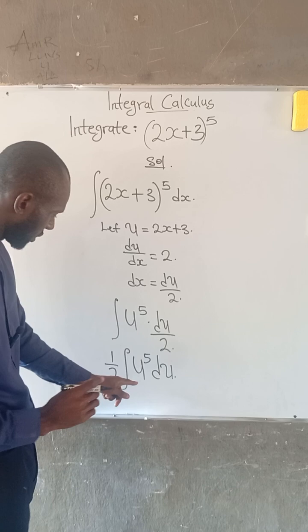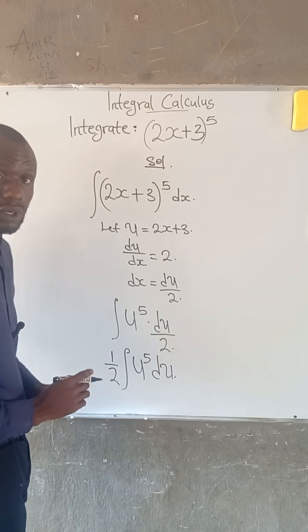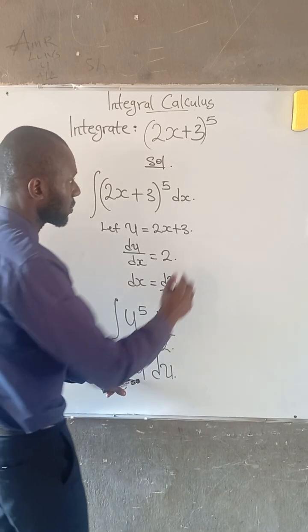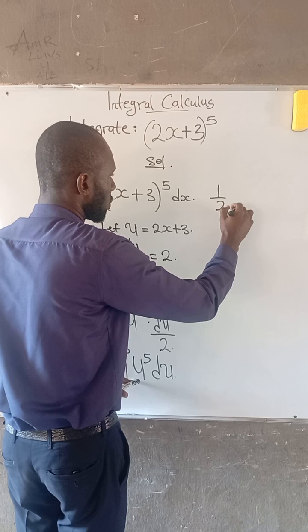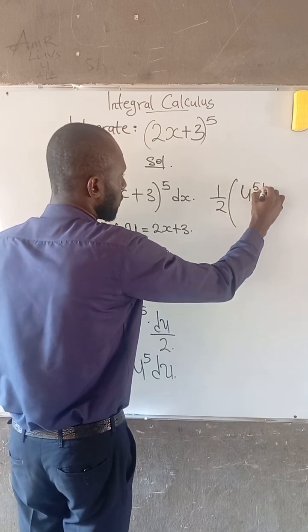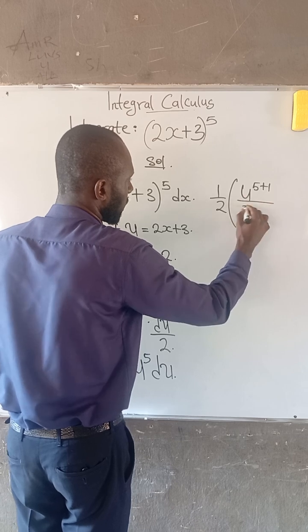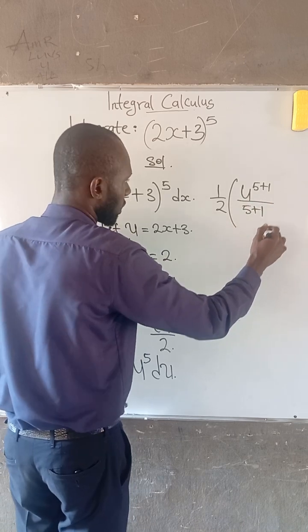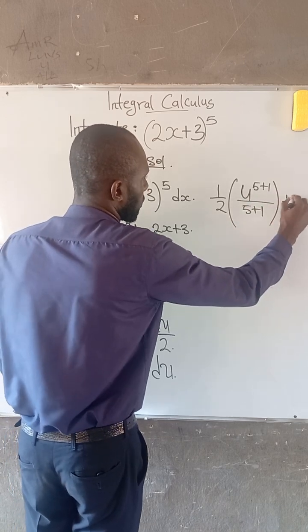So at this point we can integrate u to the power of 5. If we do that, this becomes 1/2. Open your bracket. This is u to the power of (5 + 1) divided by (5 + 1) plus c.